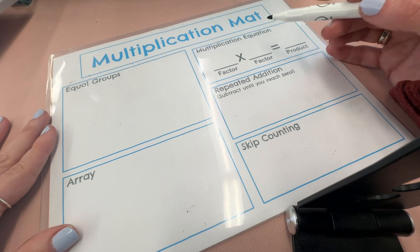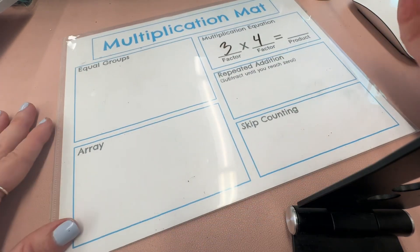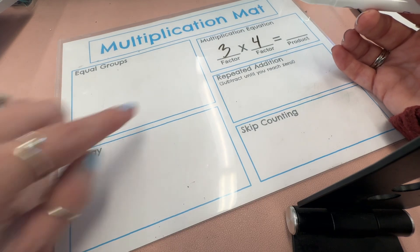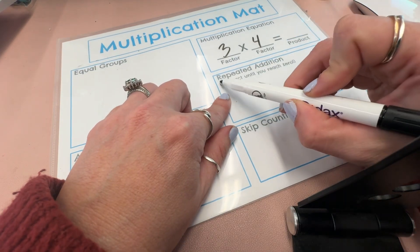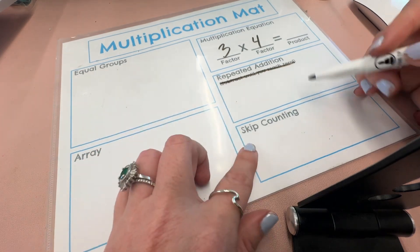So if a student was trying to solve three times four, there's different ways they could get to the answer. Equal groups or repeated addition. This right here is a typo. Please cross it off when you get it and skip counting.